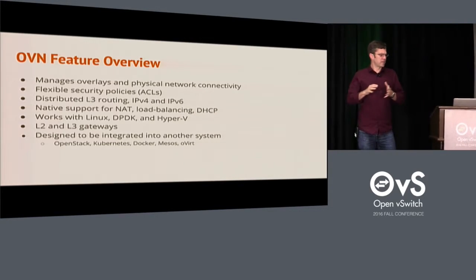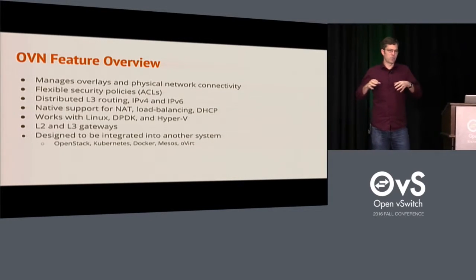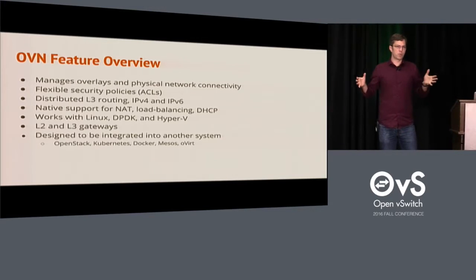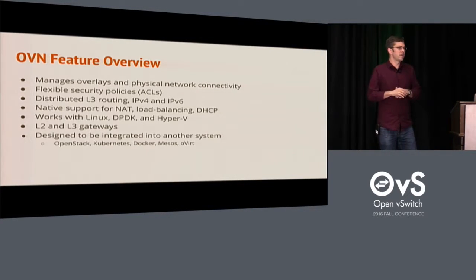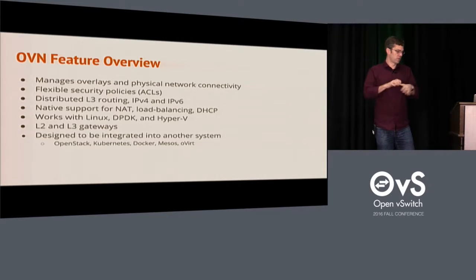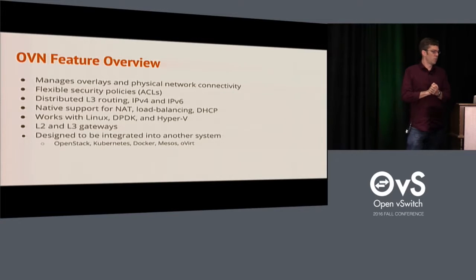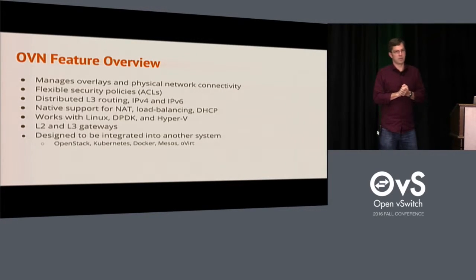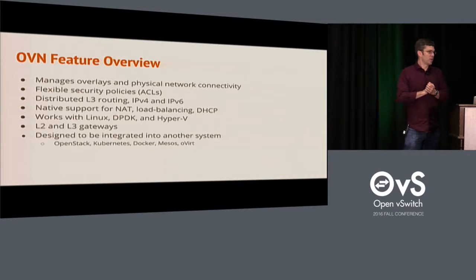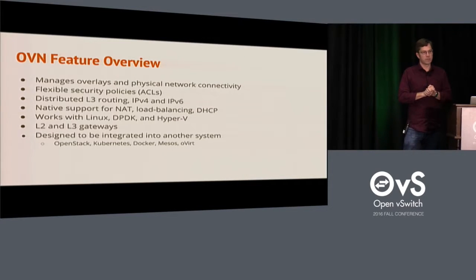One key thing is that OVN isn't really a system itself — it's meant to provide virtual networking, but it needs something else to do the management. We have hooks for a number of different platforms. There's the OpenStack work that's part of the Newton release. We also have Kubernetes, Docker, Mesos, and Overt support as well.